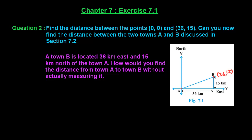Point B has coordinates (36, 15), and this is the origin with coordinates (0, 0). So if we find the distance between these two points, we can find the distance between towns A and B.